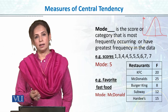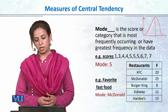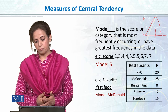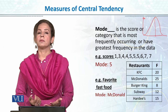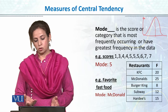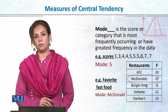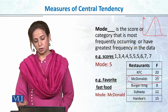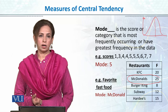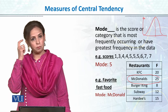Jaise ek chhota sa survey hamne class mein kiya, asking the fast food choices of students, ke what they prefer — us mein aap dekh sakte hain ke KFC 20 people preferred, McDonald's was choice of 25 people, Burger King 8 people preferred, Subway 12, and Hardee's 15. So agar find out karna hai ke what is the most favorite food of students among the fast food given, toh McDonald's is the answer, because maximum people — the group with the most occurring frequency — aapka McDonald's hai. So humare paas favorite fast food ka central value nikalna hai toh hum mode nikalenge.